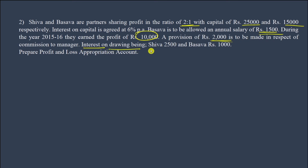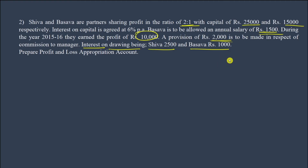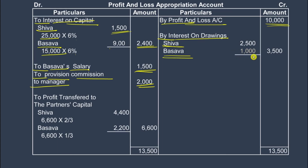Interest on drawings: Shiva's interest on drawings is 2,500 rupees per annum and Baswa's is 1,000 rupees per annum. Interest on drawings is brought to the credit side of the Profit and Loss Appropriation Account, while partners' other charges go to the debit side.